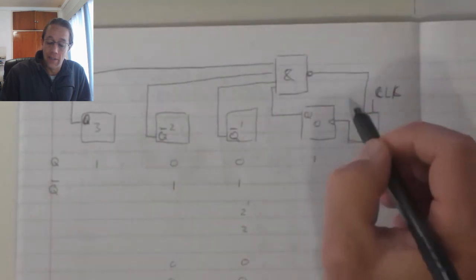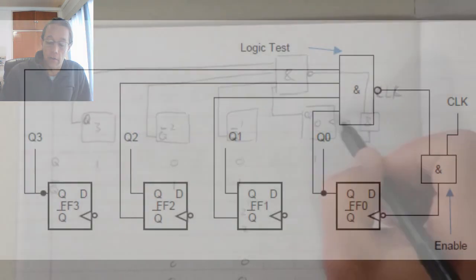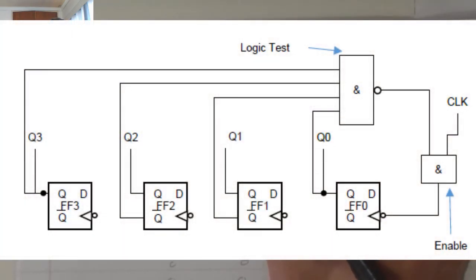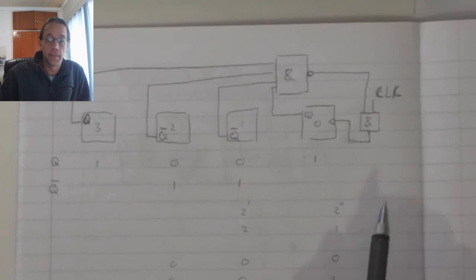As a result, this counter will now deactivate the clock pulses from entering the flip-flop when I have a 1, 0, 0, 1 configuration on the input.